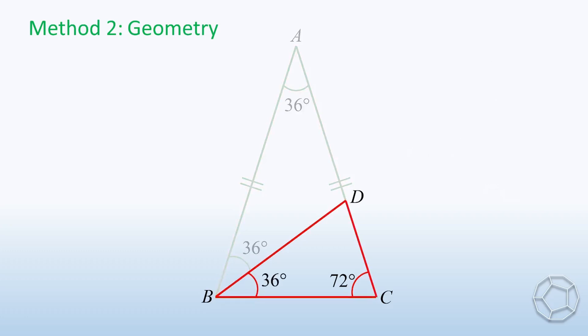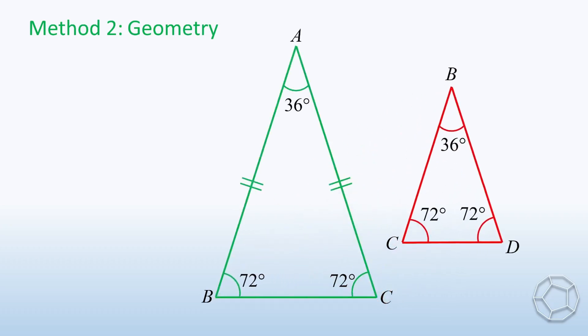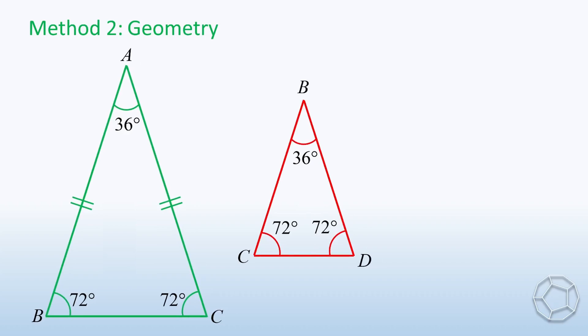Then, we look at the red triangle. Angle D can be found easily, which is also equal to 72 degrees. Well, all these are not just coincidences. Let's look at the green triangle and the red triangle together. Because all the three pairs of angles are equal, that is AAA, so the two triangles are similar. We will make use of this important result in a second.